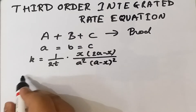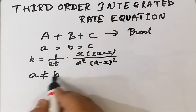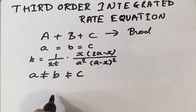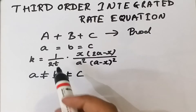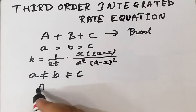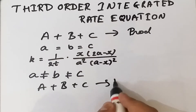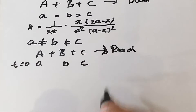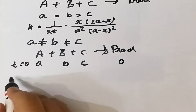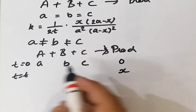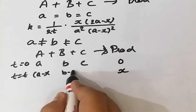Today we are going to discuss the condition wherein A is not equal to B and not equal to C — meaning the concentrations of all three reactants are different. As considered previously, suppose the initial concentrations are a, b, c at time t equals zero, and the concentration of product is zero. At time t, suppose x amount of product is formed, then the concentrations become a minus x, b minus x, and c minus x.